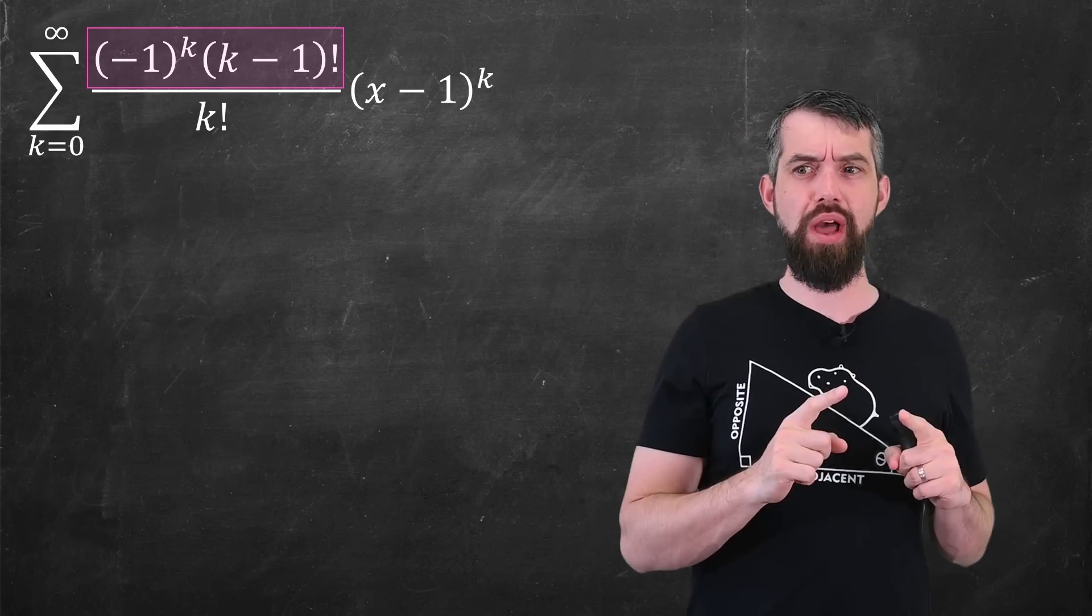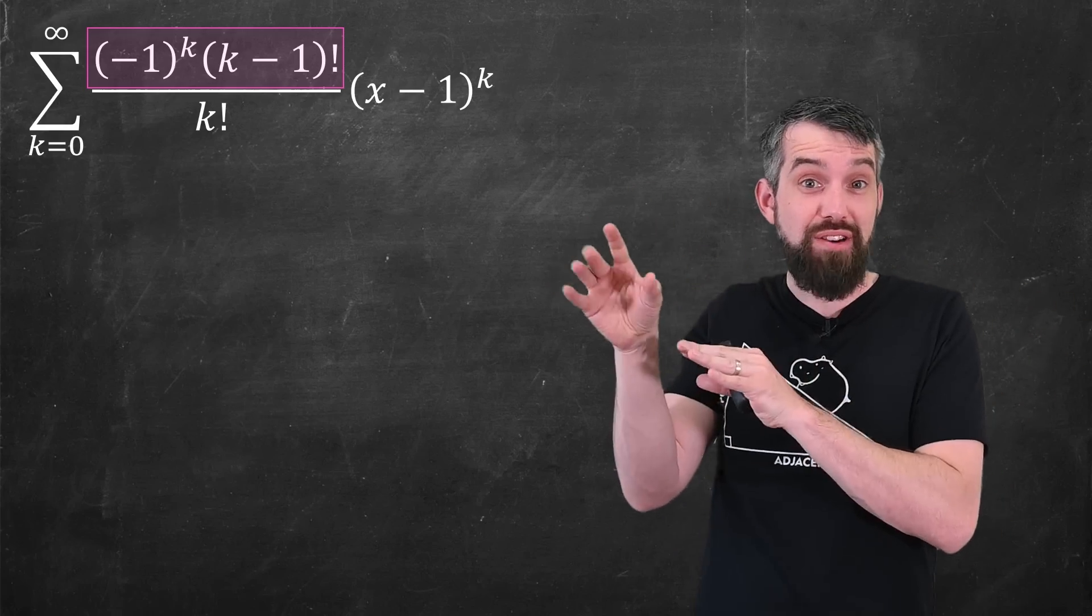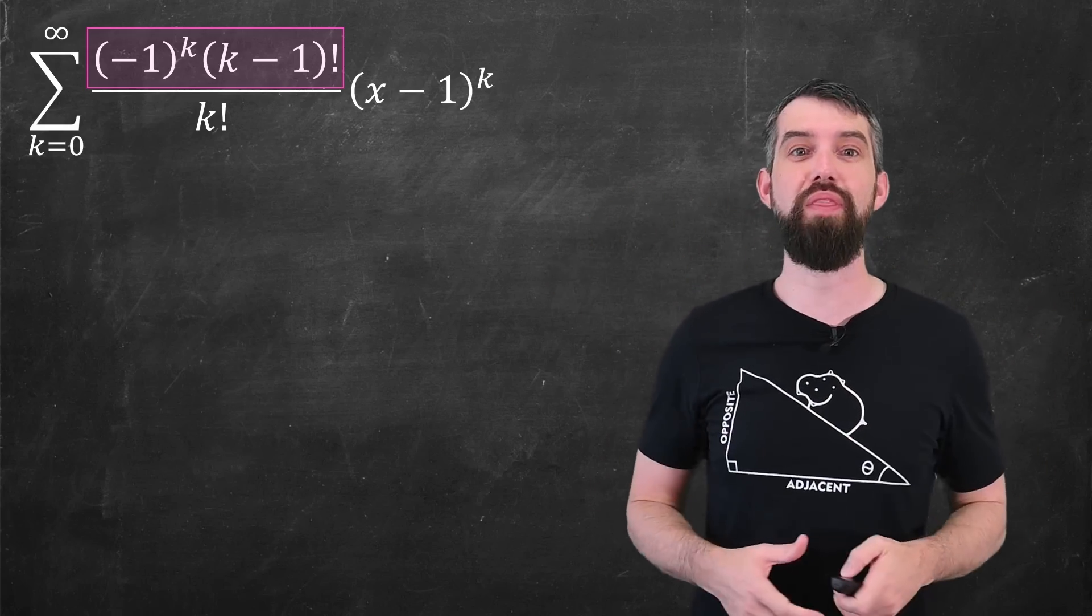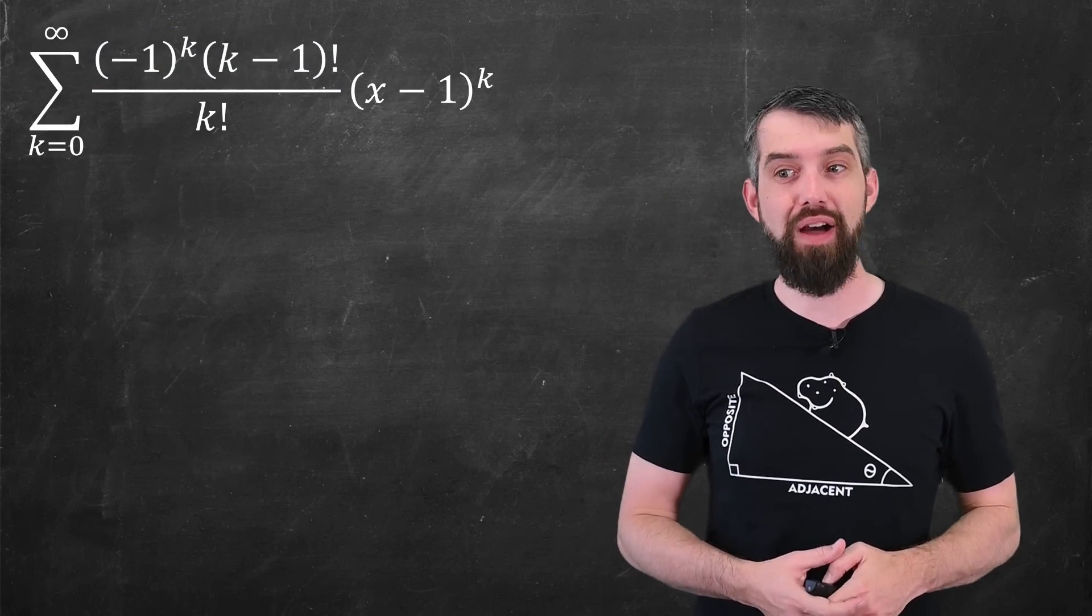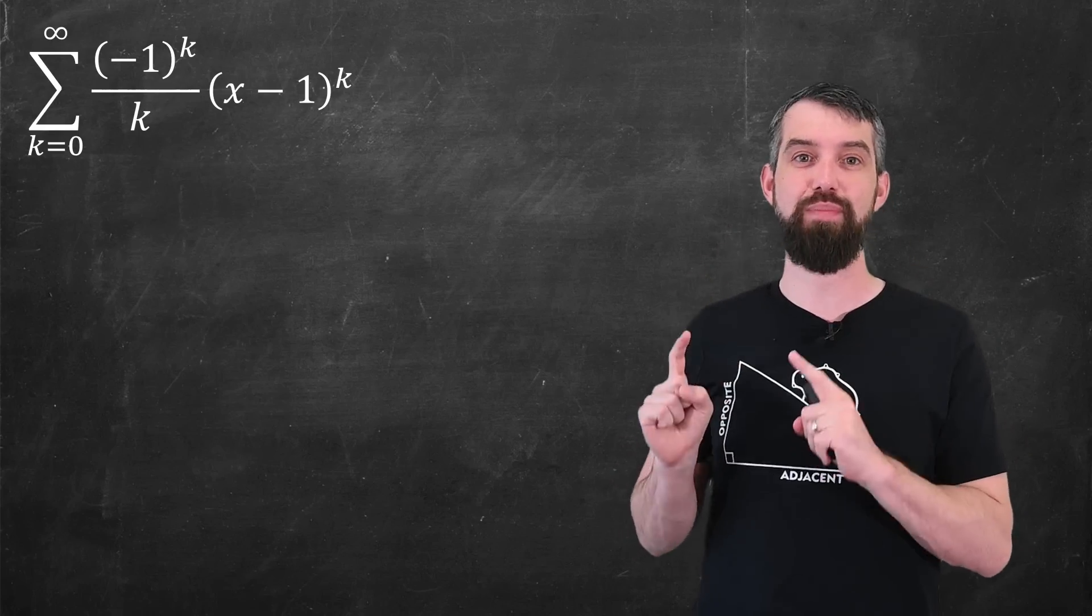On the top, there's a k minus 1 factorial. On the bottom, there's a k factorial. Almost all of those factorial factors are going to cancel, except for the largest one, the kth one. And so I can simplify this to be nothing but minus 1 to the k divided by k times x minus 1 to the k.